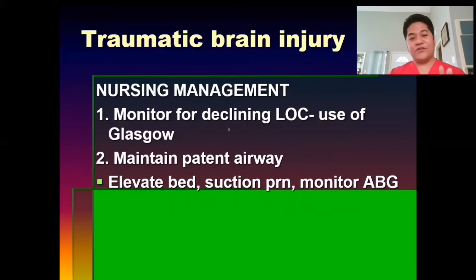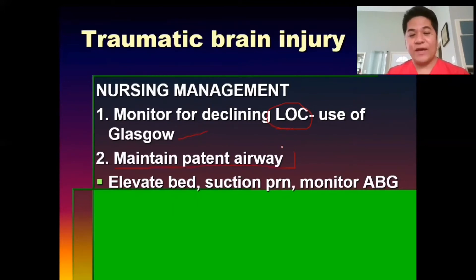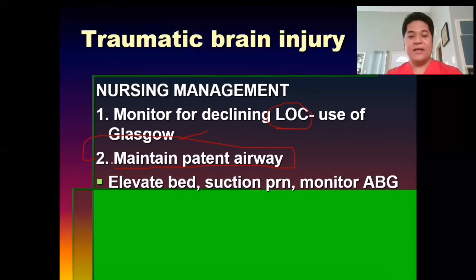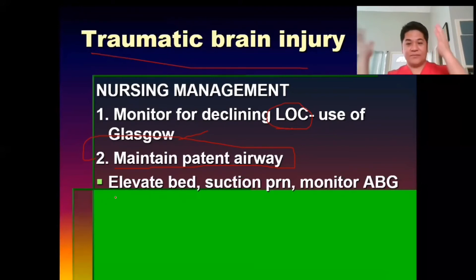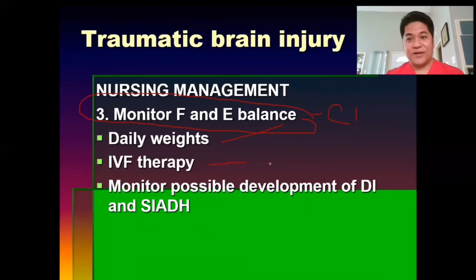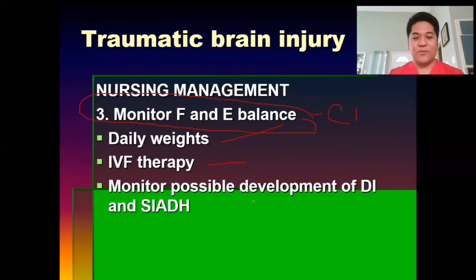For nursing management: monitor for declining level of consciousness using the Glasgow Coma Scale. Maintain a patent airway — the treatment is almost the same as for increased ICP. Elevate the bed 30 to 45 degrees. Suction as necessary and monitor ABG (arterial blood gases). Monitor fluid and electrolytes because the client is at risk for cerebral edema. Also monitor daily weights and administer IV therapy such as furosemide or mannitol to decrease tissue inflammation and ICP.